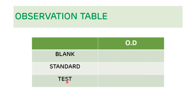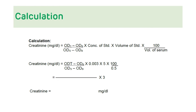Observation and calculation: after reading the optical density, place the OD values of blank, standard, and test in the observation table. The formula for estimation of serum creatinine is: (OD of test − OD of blank) ÷ (OD of standard − OD of blank) × concentration of standard × volume of standard × 100 ÷ volume of serum. With concentration of standard = 0.003, volume of standard = 5, and volume of serum = 0.5, this simplifies to (OD test − OD blank) ÷ (OD standard − OD blank) × 3. This gives the creatinine value in mg/dL.